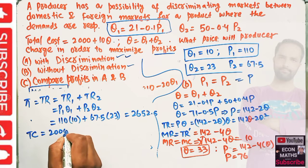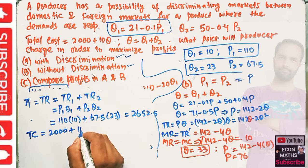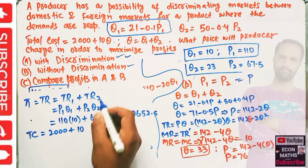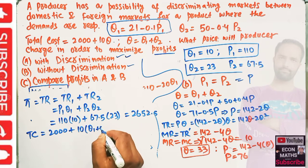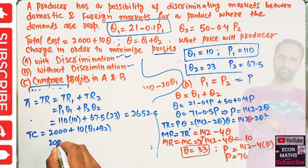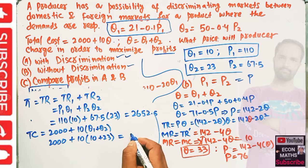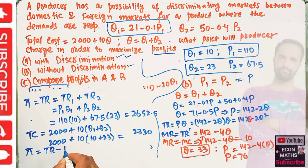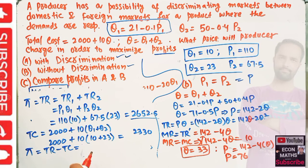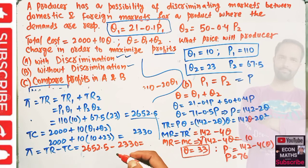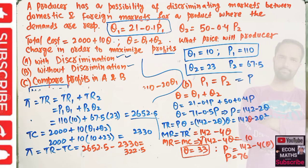Total cost is 2000 + 10Q = 2000 + 10(Q1 + Q2) = 2000 + 10(10 + 23), which comes out to 2330. Total revenue with discrimination equals 1100 + 1552.5 = 2652.5. Profit with discrimination = 2652.5 - 2330 = 322.5.